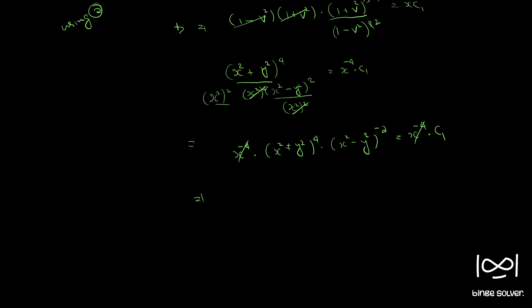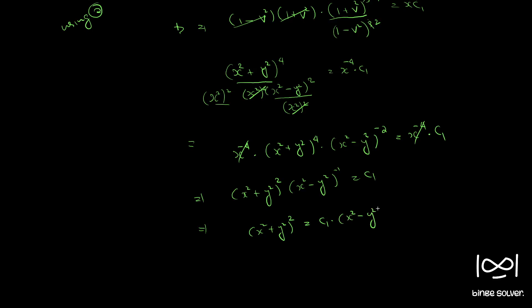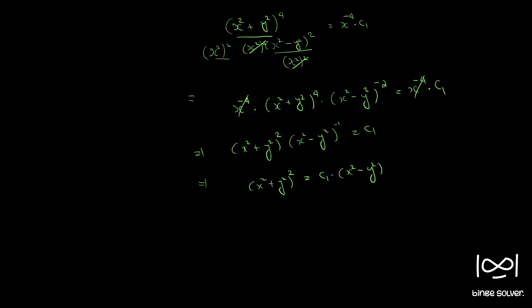Taking square root of both LHS and RHS, we get (x² + y²)² raised to minus 1 and (x² minus y²) raised to minus 1, equal to c₁. Taking this to the RHS, we get (x² + y²)² equals c₁ times (x² minus y²) raised to plus 1. So the answer is x² minus y² equals constant times (x² + y²)².